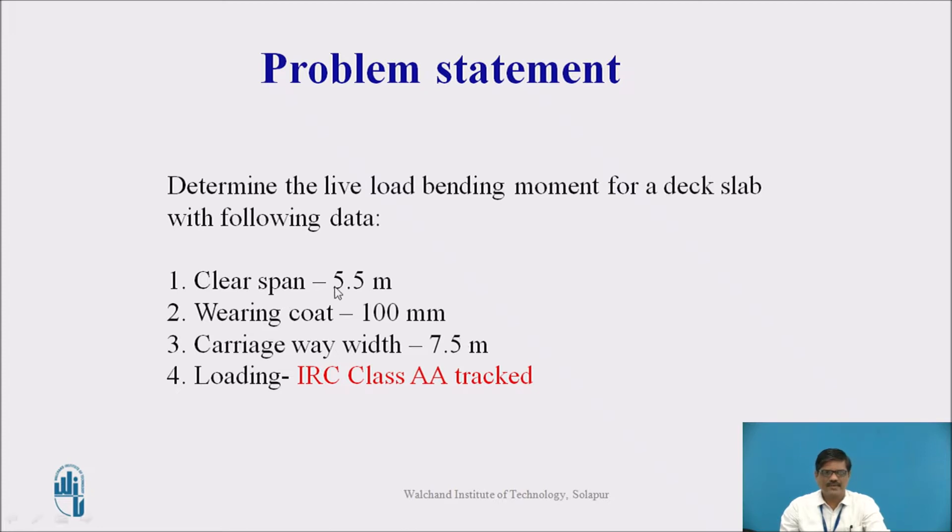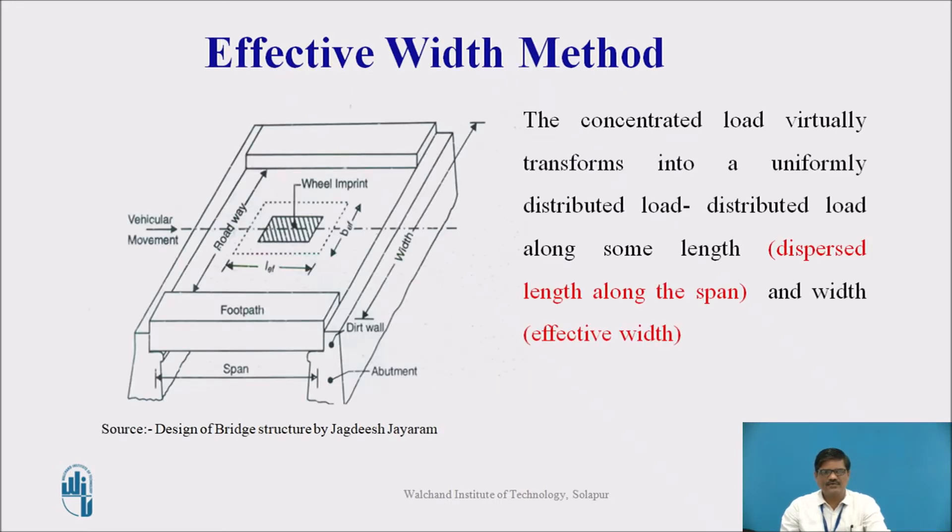Determine the live load bending moment for a deck slab with following data: Clear span is 5.5 meter, wearing coat thickness is 100 mm, carriage-way width is 7.5 meter, and the loading to be considered is IRC class AA tracked. Before we proceed further, let us take a quick review of effective width method.